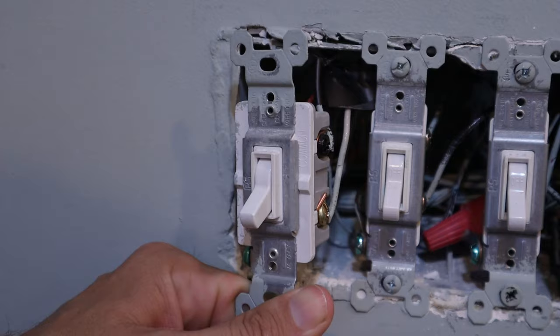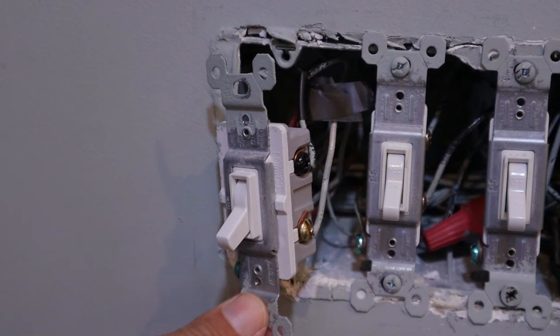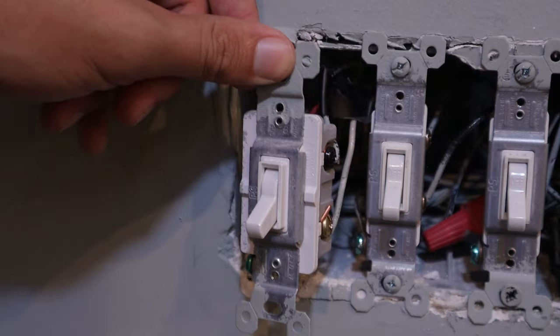Now, in this particular instance, that black wire is the only one I've got going to this light switch. But in a lot of cases, you're going to have multiple black wires. So it's always best to mark the line wires so that you know which one is which once you've removed all these wires from the light switch.